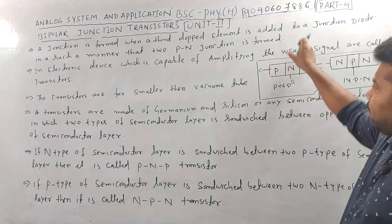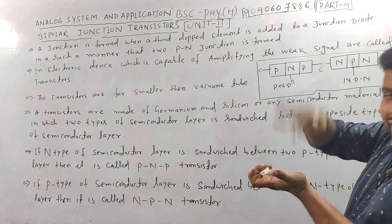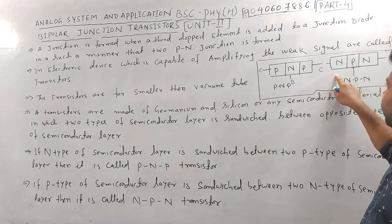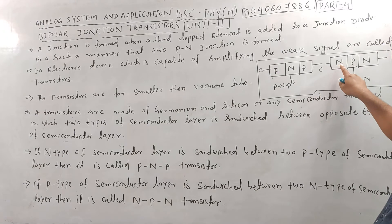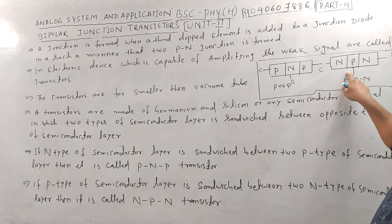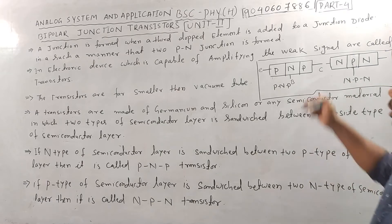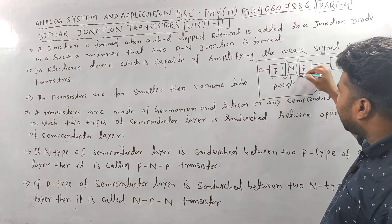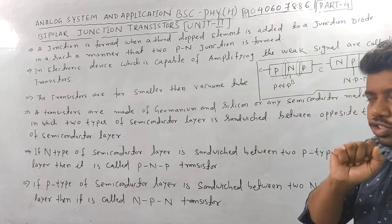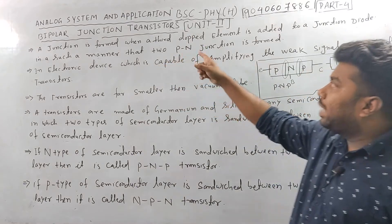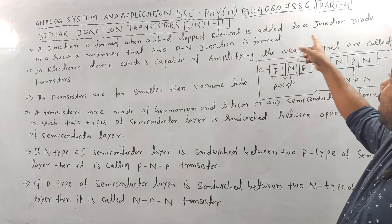If the doped element is P-type, it will be an N-type semiconductor in the middle — sandwiched — making it PNP. If the doped element is N-type, it will be an NPN transistor, forming two PN junctions.